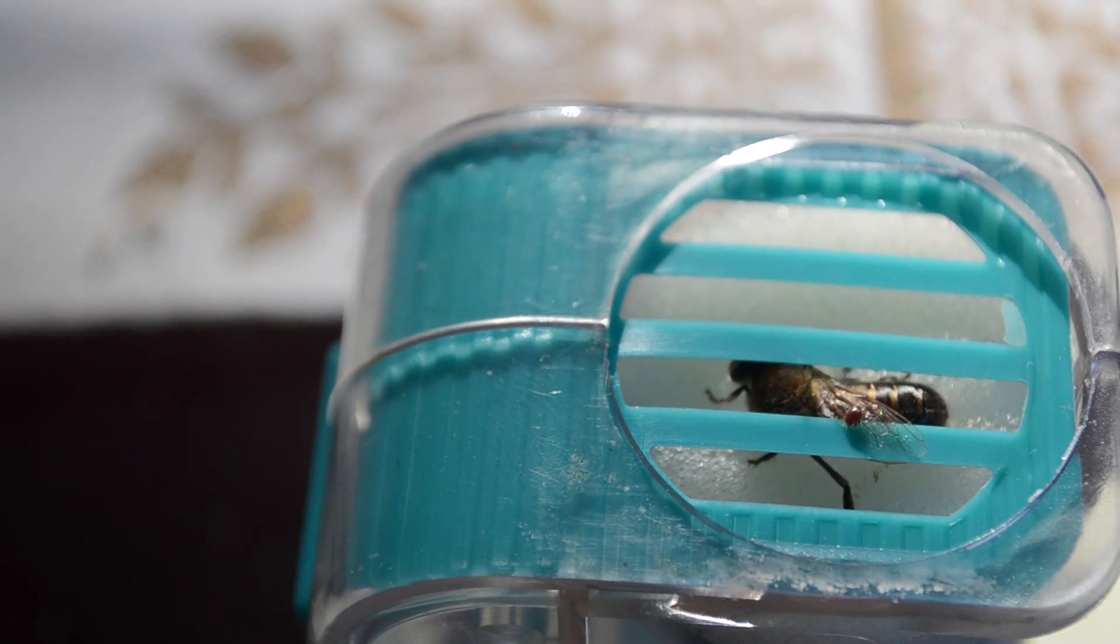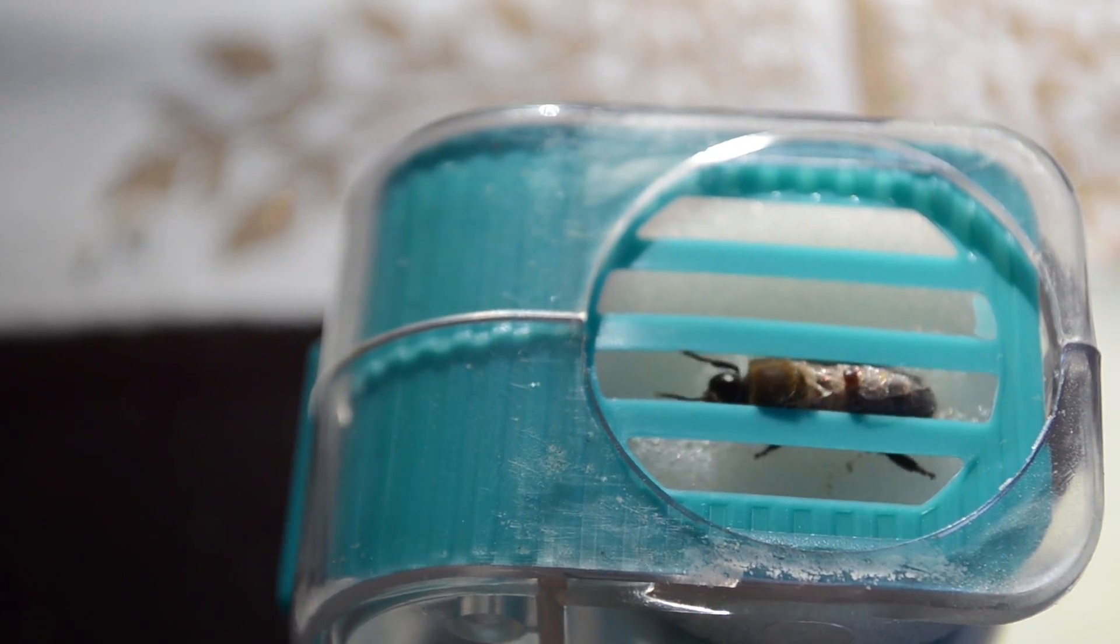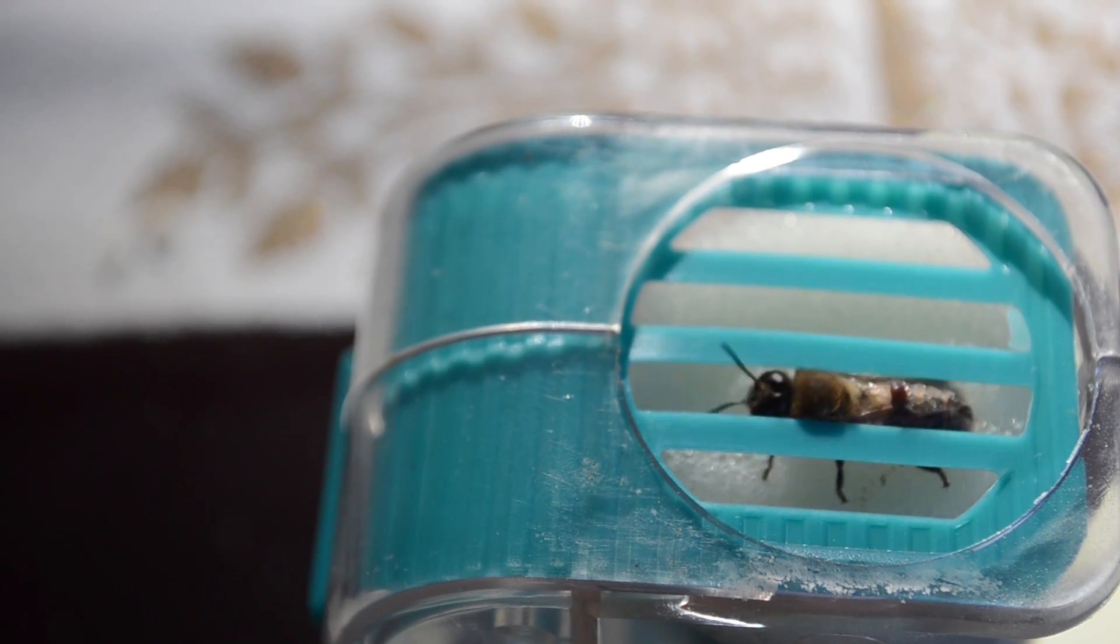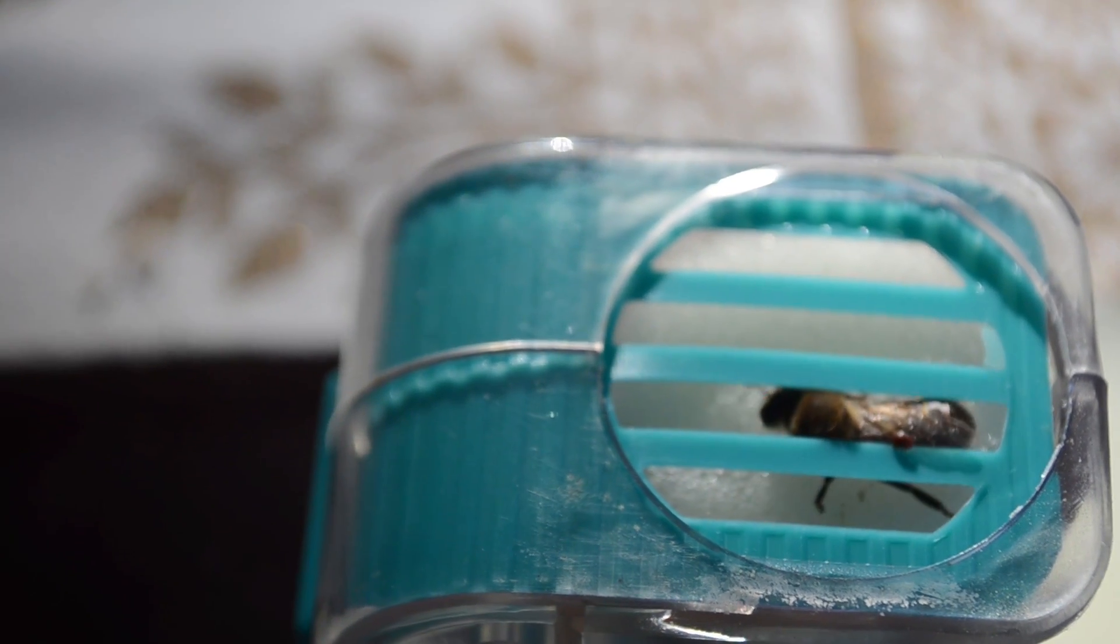The varroa mite, or varroa destructor, is a parasite that sucks the life out of a bee, and doing so causes all kinds of nasty viruses that spread throughout the hive.